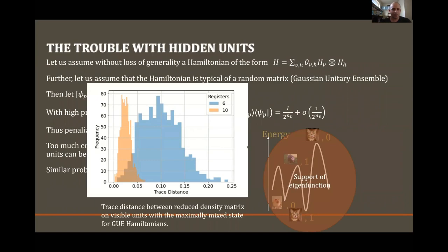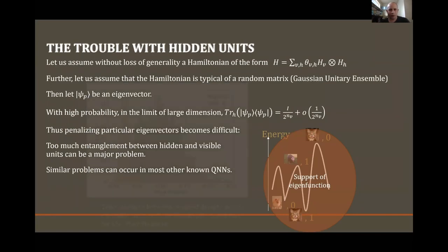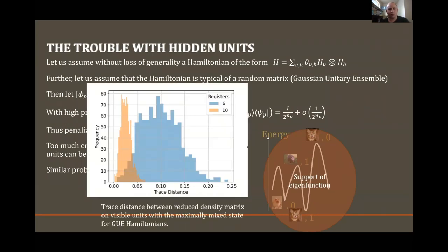Here is an example of what happens when we have six and ten hidden units with one visible unit — an extreme case to give a numerical example showing what happens to the trace distance between the maximally mixed state and the partial trace over the hidden units. As you can see, as the number of hidden units increases, the trace distance becomes concentrated near zero, confirming that the hidden units are driving the visible system towards the maximally mixed state.